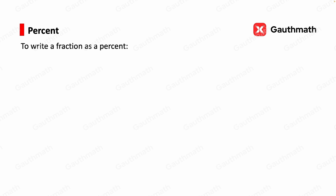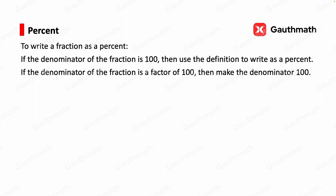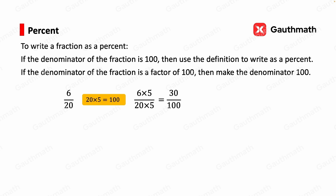To write a fraction as a percent, there are three different scenarios. First, if the denominator is 100, use the definition directly. Second, if the denominator is a factor of 100, make the denominator 100. For example, 6 over 20: since 20 times 5 equals 100, multiply both numerator and denominator by 5 to get 30 over 100, which is 30%.